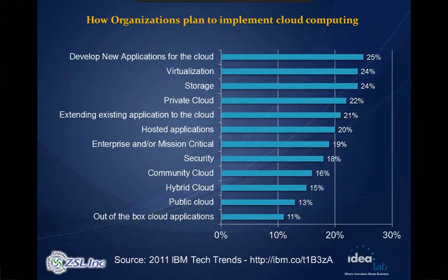How organizations plan to implement cloud computing: the top three approaches are developing new applications for the cloud, virtualization, and storage — each running roughly 25 to 11 percent in the implementation chart. Many clients ask how to develop new applications or migrate existing applications to the cloud, and whether they can cloud-enable applications right from the beginning.